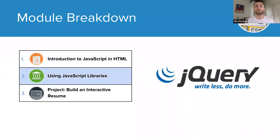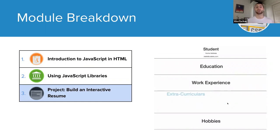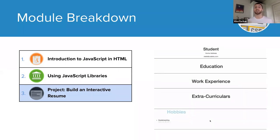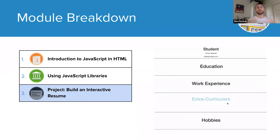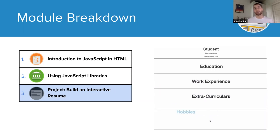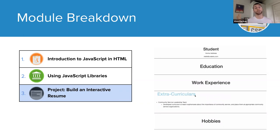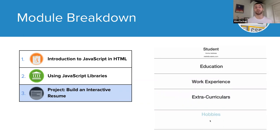In the second module, students are introduced to jQuery, a lightweight and capable JavaScript library. Students learn how libraries can be incorporated into their website and how to read documentation to use these libraries most effectively. Their newfound skills in jQuery and JavaScript are put to the test in their first project — building an interactive resume. Students learn what makes a good resume, create one that allows users to interact with the information, and peer-evaluate a classmate's resume against the provided rubric.